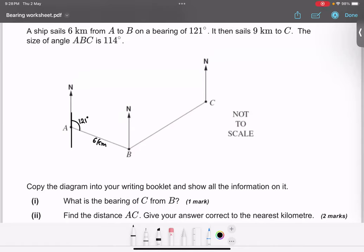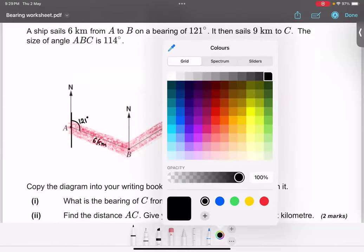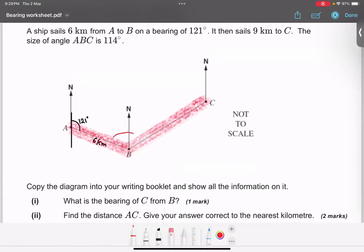It then sails 9 km to C. The angle of angle ABC is 114. So angle ABC is actually this angle - A, B and C, this particular angle. They are telling us this particular angle is 114.